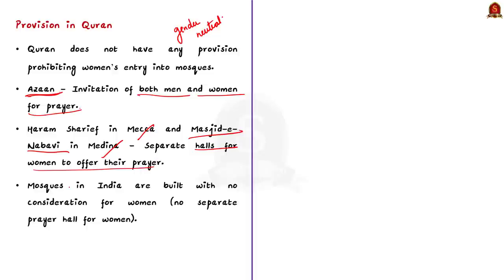With this, we have come to the end of this discussion. We saw about previous instances where the ban on entry of women into masjids arose, important provisions of the constitution ensuring women's entry, legal provisions from the Sabarimala judgment, and the provisions mentioned in the Quran and the Indian scenario. Let us move on to the next article discussion.